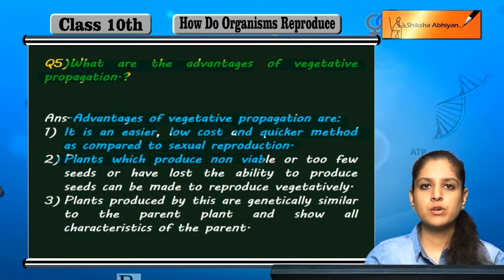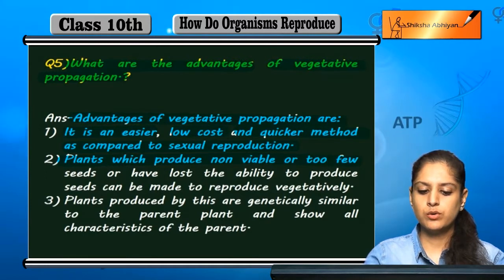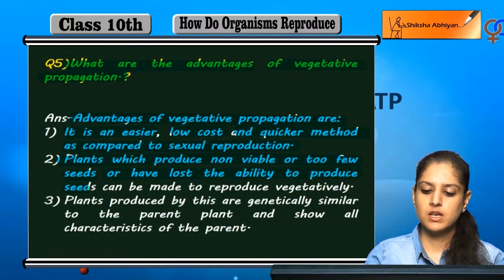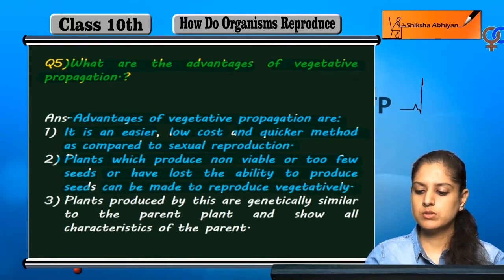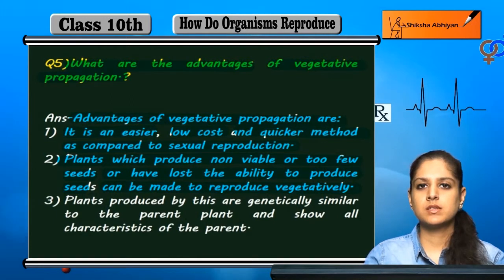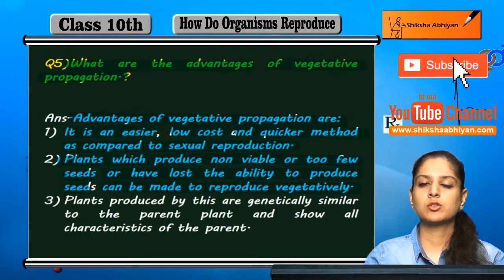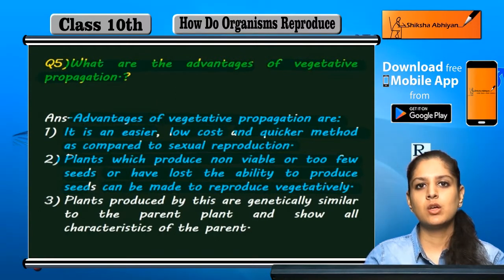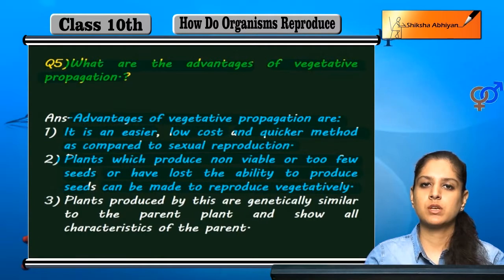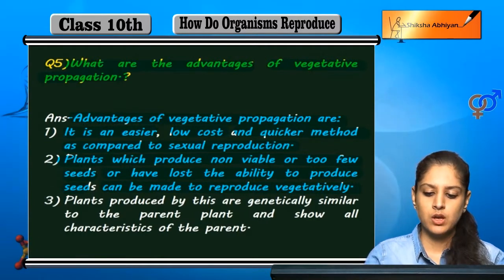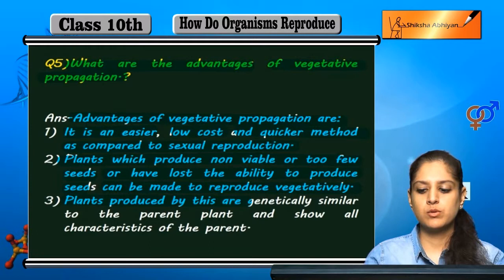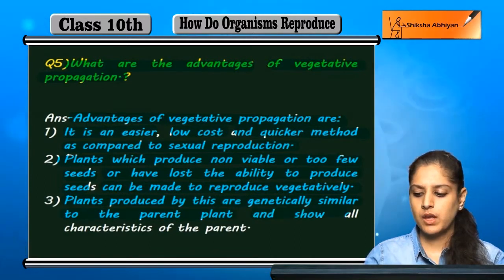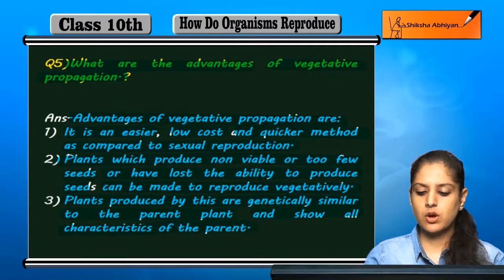Plants which produce non-viable or too few seeds, or have lost the ability to produce seeds, can be made to reproduce vegetatively. Plants produced are genetically similar to the parent plants and show all characteristics of the parents.